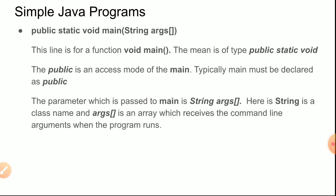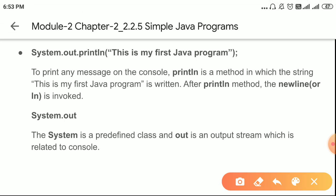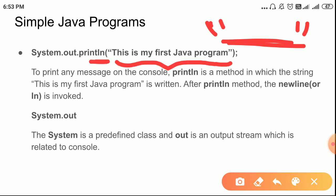System.out.println is used to print a message on the console. println is a method — the string 'This is my first Java program' is written after println. After println, a new line is invoked — that is what 'ln' means: new line. Whatever you write inside double quotes is treated as a string. After printing the message on the console window, the cursor moves to a new line — that is why we use println.